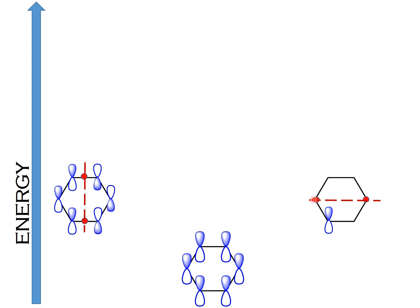Starting from the first carbon with the shaded part up, there is a node on the next carbon so no orbital is drawn there. Across the node, we draw the next p orbital with opposite wave functions — shaded part down. Moving further, the adjacent carbon has the same wave function with unshaded part up, then another node, and the final carbon has opposite wave functions. Interestingly, this last carbon has the same wave functions as the first one because there is no node between them. This is how you draw the third molecular orbital.